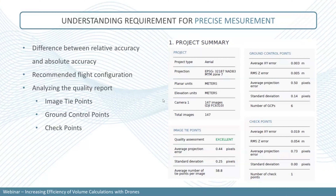Relative accuracy refers to how well your project is reconstructed together — how well your images are tied together. This is influenced by the overlap of your images, the lens used, and the flying altitude. Having at least 70% front lap and 50% side lap provides a lot of redundancy between images and enables them to be tied together. Relative accuracy also refers to how well you can measure from one point to another within your map — everything that is related to everything else.